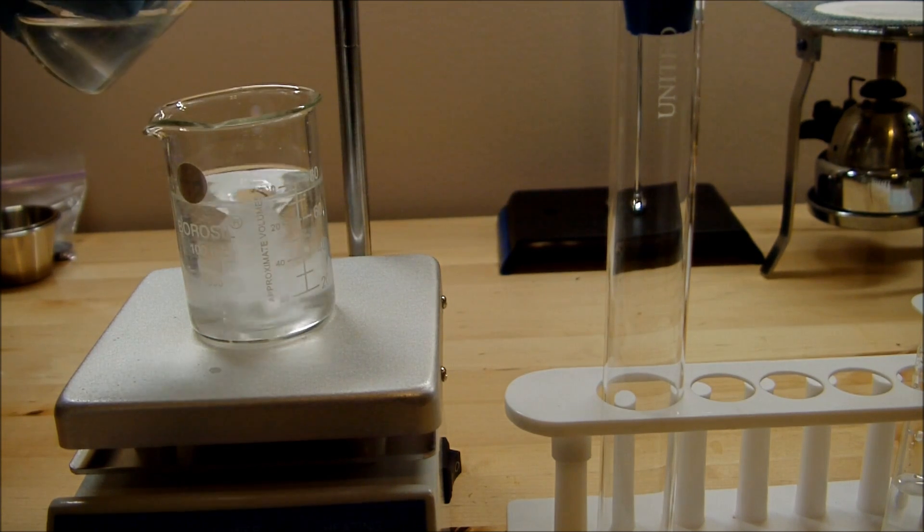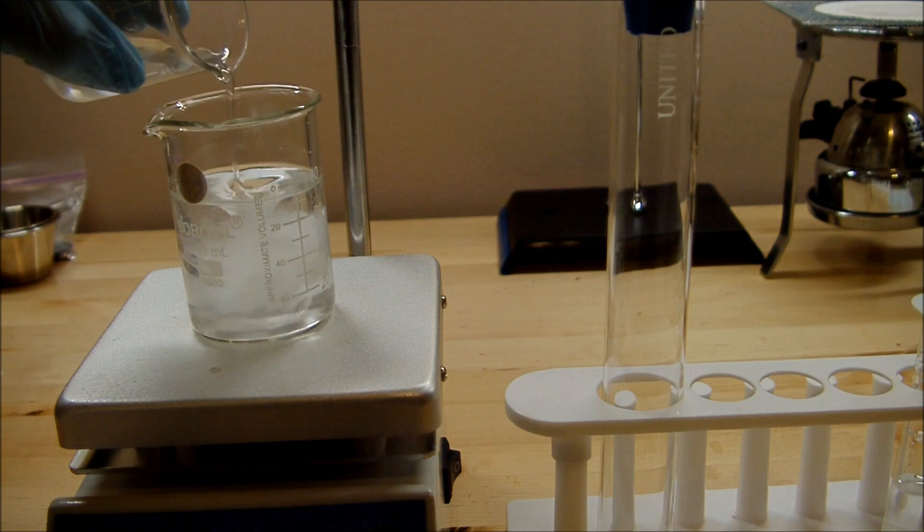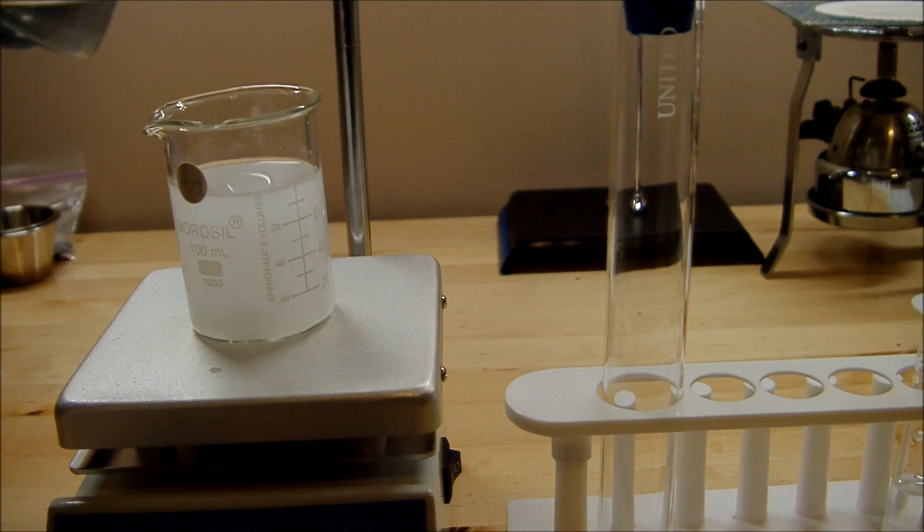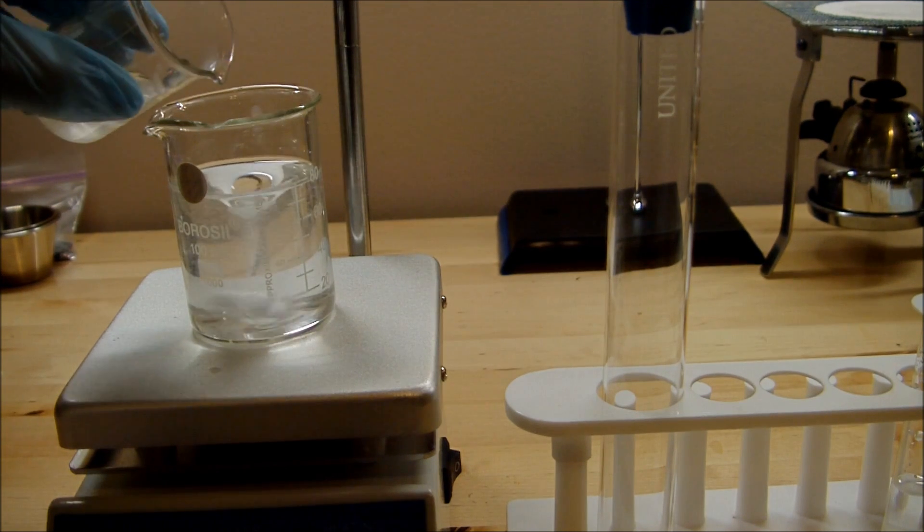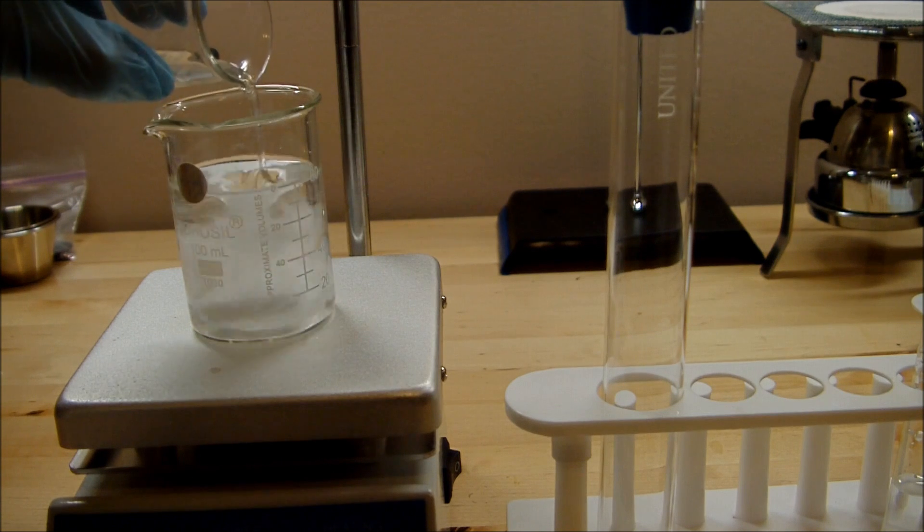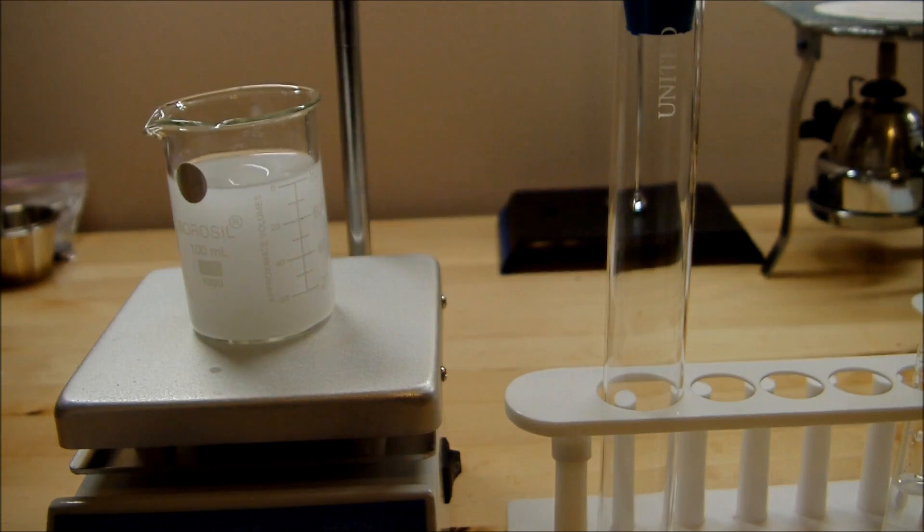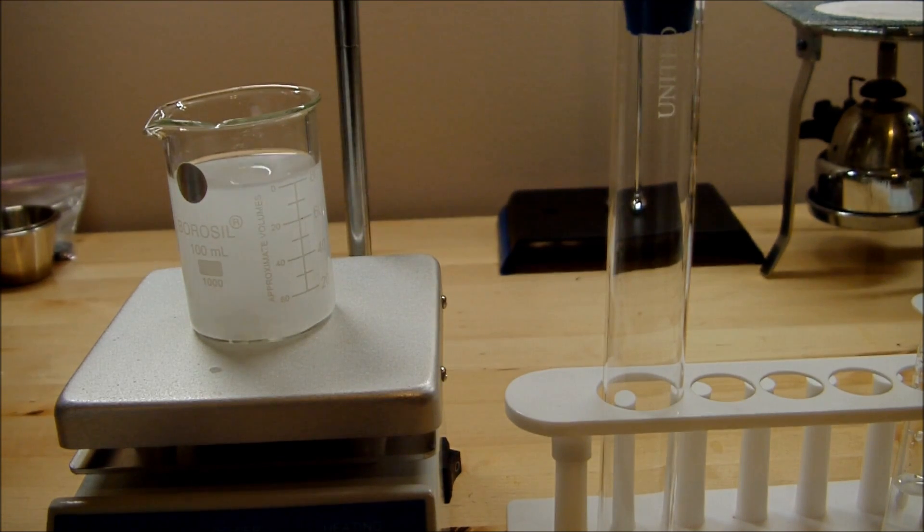The idea is that the solubility of chemicals changes based on factors such as temperature and pressure. So when those change, it should change the precipitation that goes on in the storm glass, and it'll form different patterns based on what the approaching weather is supposed to be like.